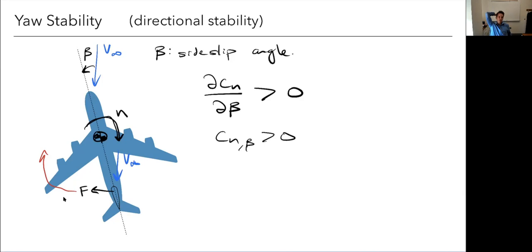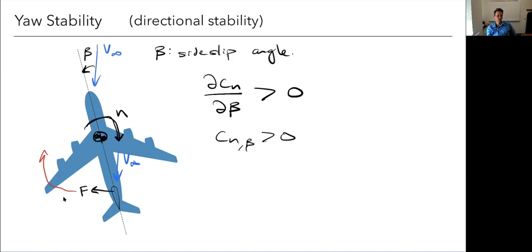A good range for CN_beta is roughly 0.05 to 0.15 per radian. This is different from longitudinal and roll stability where there's both a lower and upper limit — for yaw stability, there isn't really such a thing as too much. If you could have more for free, you'd just take it. That doesn't mean you want huge vertical tails, because you're adding weight and drag, but having more yaw stability isn't inherently problematic.